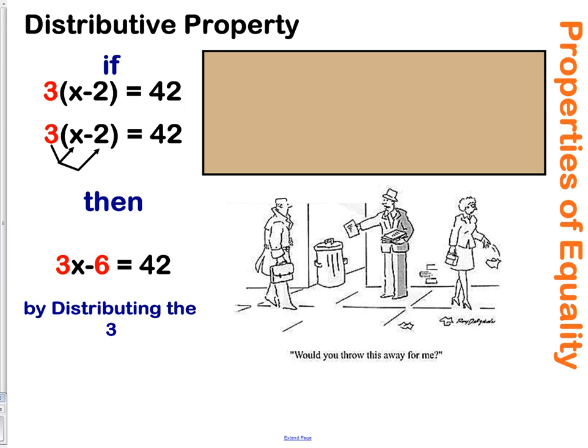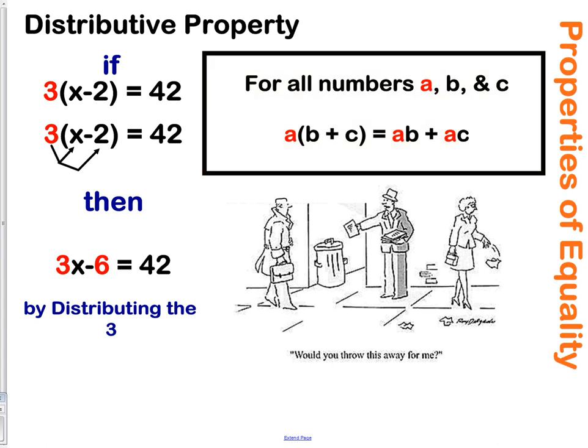The distributive property — we've used this a lot in math already. If we have parentheses with the 3 in front of it, so we have 3 times the quantity x minus 2, we take 3 times x and 3 times negative 2 and get 3x minus 6 equals 42. The property says for all numbers A, B, and C, A times the quantity B plus C may be rewritten as A times B plus A times C.